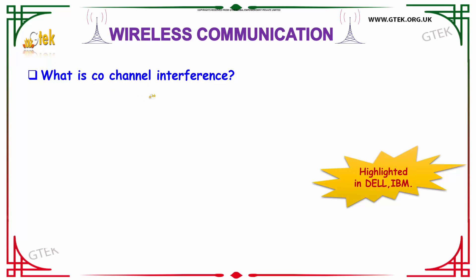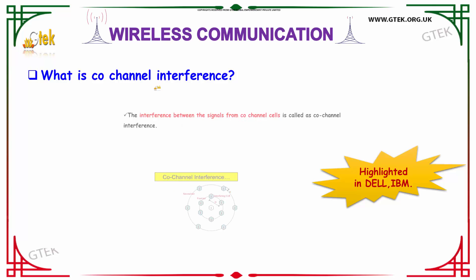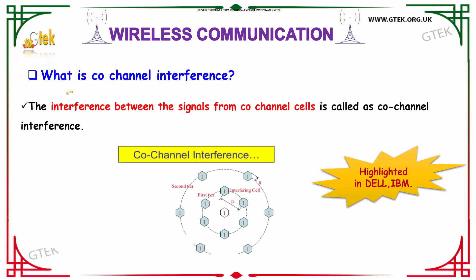What is Co-Channel Interference? The interference between the signals from the co-channel cells is called as Co-Channel Interference. You can see the depiction over here.